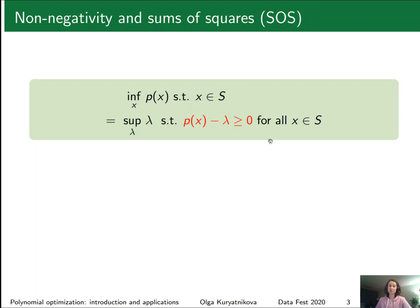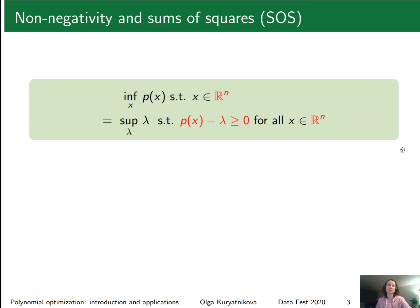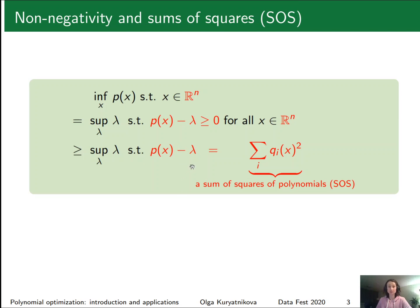Since these two problems are equivalent, this question must be hard — and it is. To deal with it we will use a particular trick, the main trick of this presentation. To introduce it we first consider a simplified case: instead of a general S we consider R^n, so we have no additional constraints. We replace the constraint that p minus lambda is non-negative on R^n by the constraint that p minus lambda equals a sum of squares of some polynomials. We then look at whether these two expressions are equivalent.